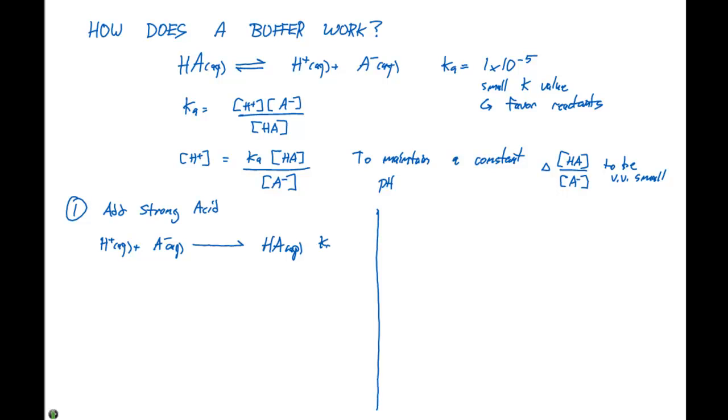And our Ka prime is gonna equal one times ten to the fifth, which is the reciprocal of our initial Ka. So that means this equilibrium is gonna lie over here to the right, which is the way I've shown this. So as we increase the concentration of HA,